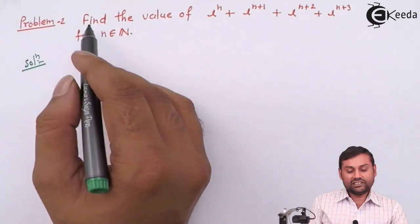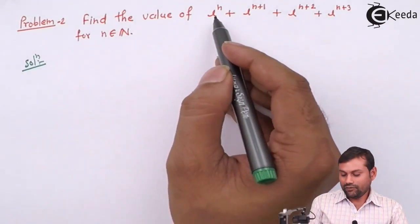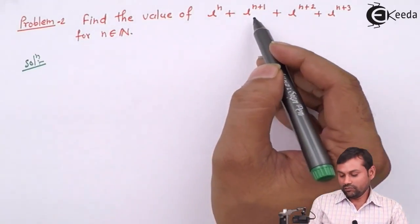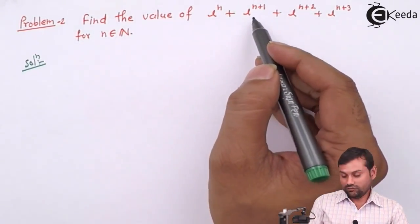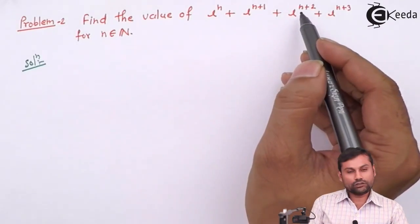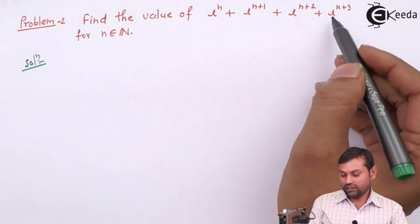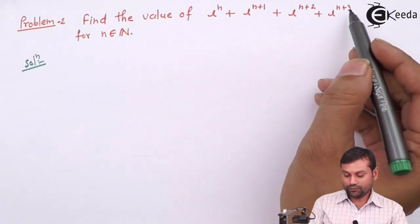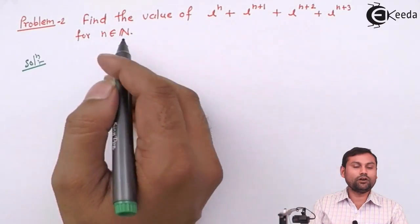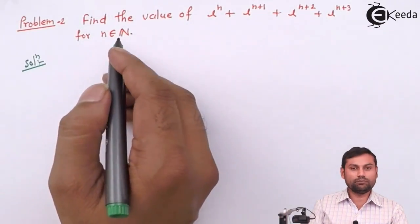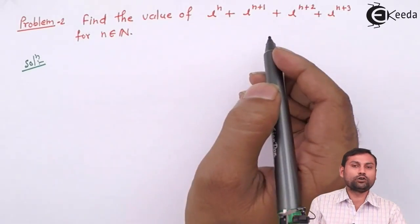The question is: find the value of i raised to n, plus i raised to n+1, plus i raised to n+2, plus i raised to n+3, for n a natural number. What is the value of this expression?